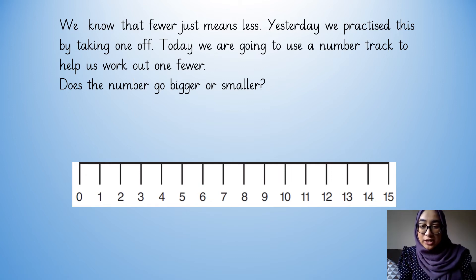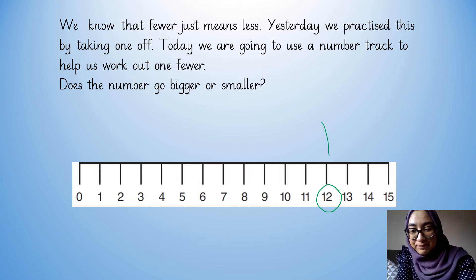Today we are going to use a number track to help us. So we have a number track on our screen from zero to 15, and we're going to use this to help us work out what one fewer is. So if I start off with 12, I want to work out one fewer, one less. And we know that means we have to take one off. So we need to go backwards.